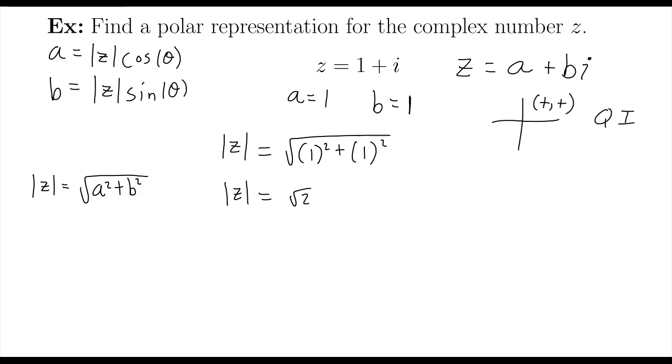Let's pick one of these formulas to use. I'll just use a. A is equal to the magnitude of z times cosine of theta. Let's plug in what I know. A is 1. I just found that the magnitude of z is the square root of 2. This times cosine theta.